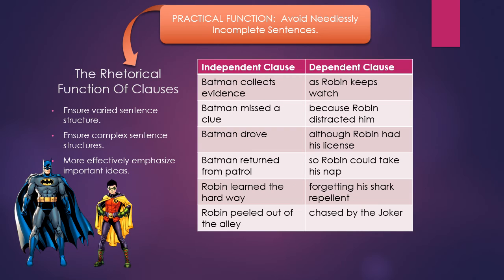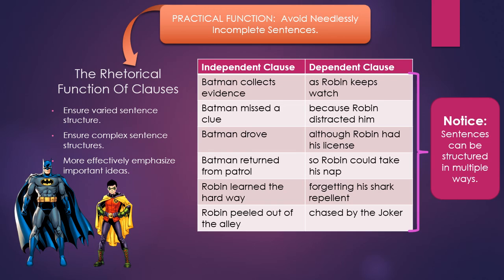Now here's the trick — getting back to the rhetorical function of things. These clauses can be structured in multiple ways to create complete sentences. I'm just going to do one for you and leave the rest for practice. The easy construction is 'Batman collects evidence as Robin keeps watch.' However, if we want to mix it up, we can switch them around: 'As Robin keeps watch, Batman collects evidence' — with a comma after 'watch.' The sentence works just as well, but now we're focused a little more on Robin and a little less on Batman.